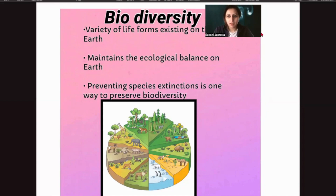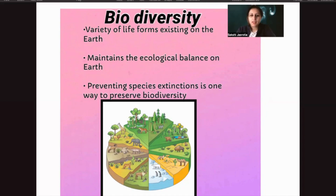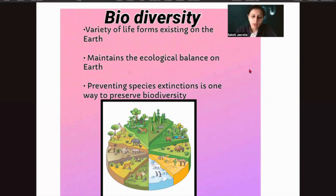Diversity means variety. 'Bio' means living, which includes plants, animals, and microorganisms. So biodiversity means the variety of life forms that exist on the earth — from the smallest creature to the biggest one.